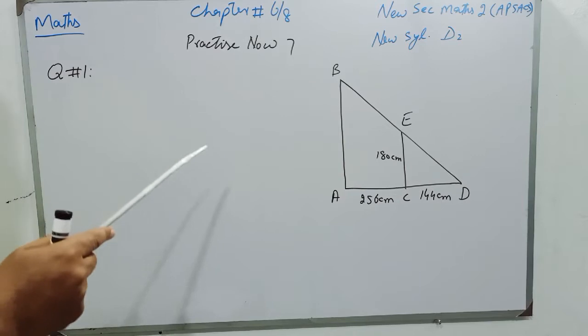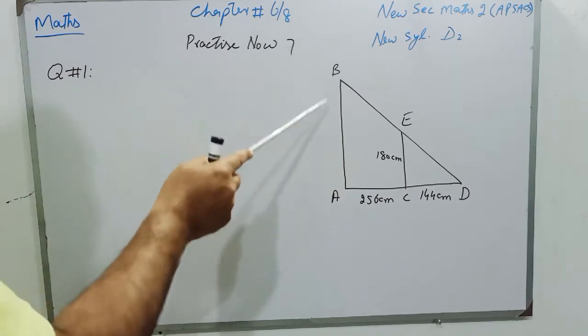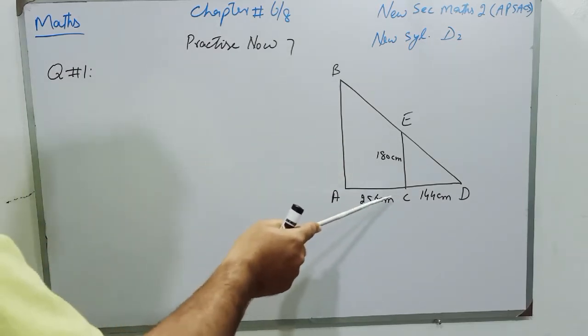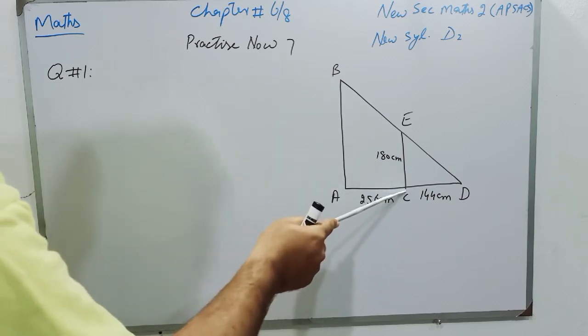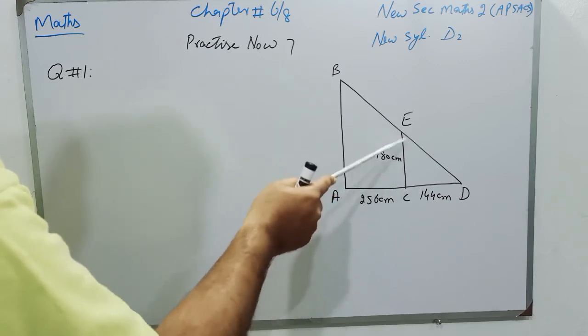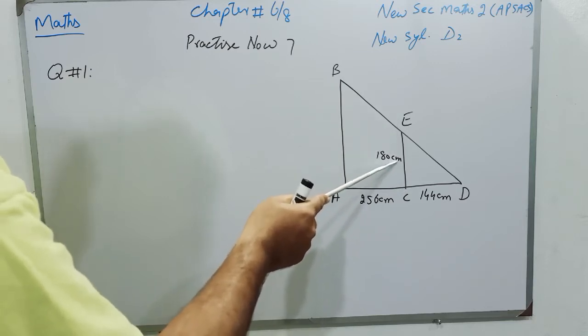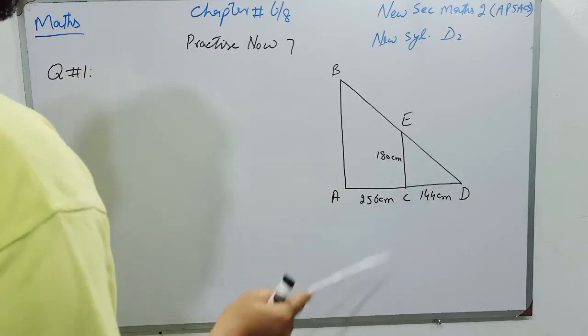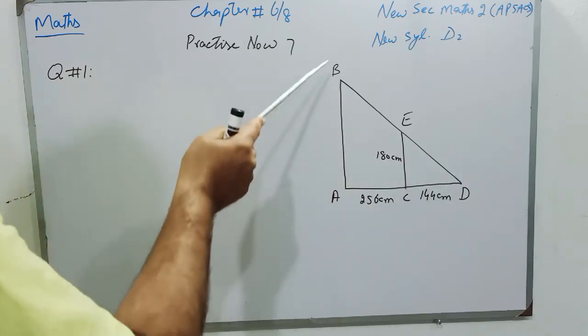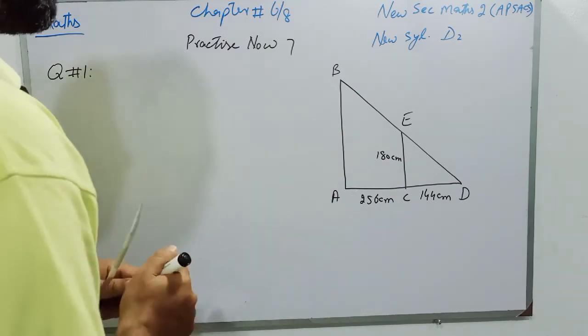Students, try to understand the question. AB is a lamp, and Ethan is standing 256 cm away from the lamp at point C. The height of Ethan is 180 cm, and his shadow is 144 cm. If you think carefully, these two triangles are similar triangles.